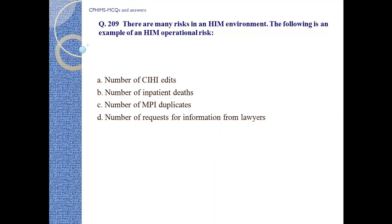Question number 209. There are many risks in the HIM Department. The following is an example of HIM operational risk: A. Number of CIHI submissions added, B. Number of inpatient deaths, C. Number of MPI duplicates, D. Number of requests for information from lawyers. Answer C: Number of MPI duplicates.